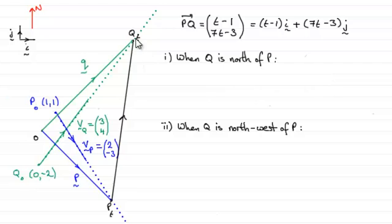When Q is north of P, we would expect this vector to be vertical. There would be no i component, just j's. That's the key to solving this.